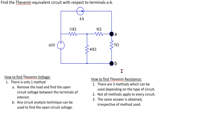In order to find the Thevenin equivalent we need to find both the Thevenin voltage and the Thevenin resistance. In order to find the Thevenin voltage we need to remove the load resistor and then find the open circuit voltage between the terminals. Let's see how we can do this.